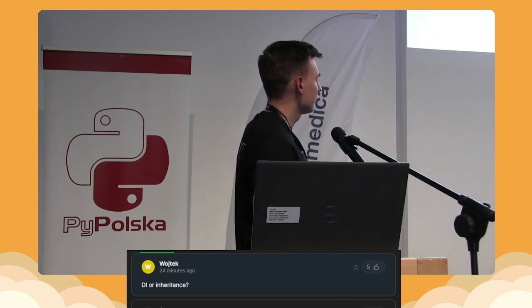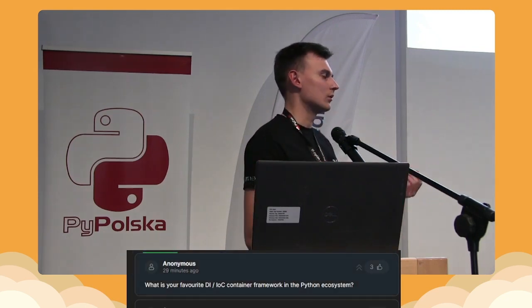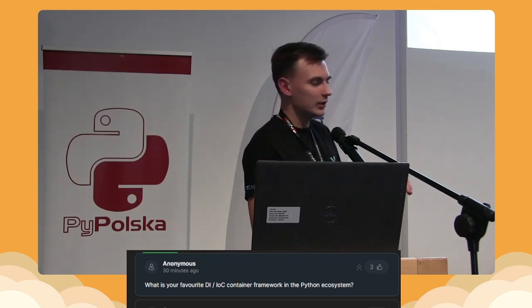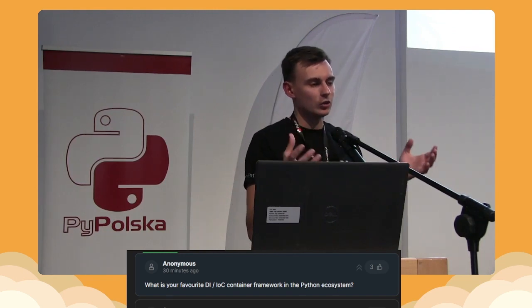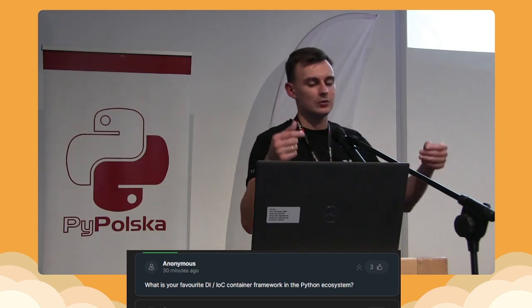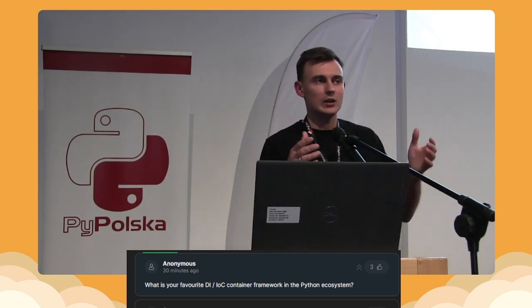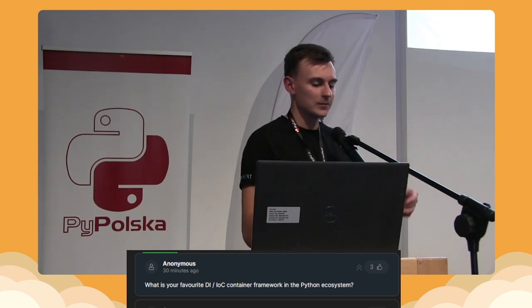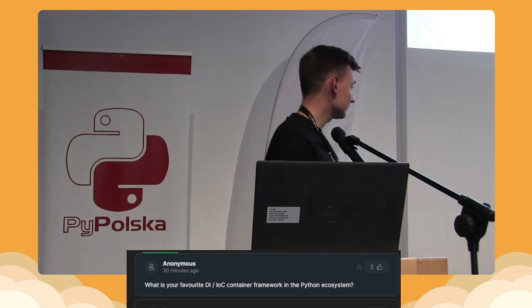What is your favorite dependency injection inversion of control container framework in the Python ecosystem? Honestly, I'm not using frameworks — I'm aware of them. If you Google 'dependency injection Python', the first result would be such a framework. I really like Python's nature — it's a balance. You don't want to bring strict rules into Python; it could be dangerous. I like that flexibility and trust that developers will do their job properly.